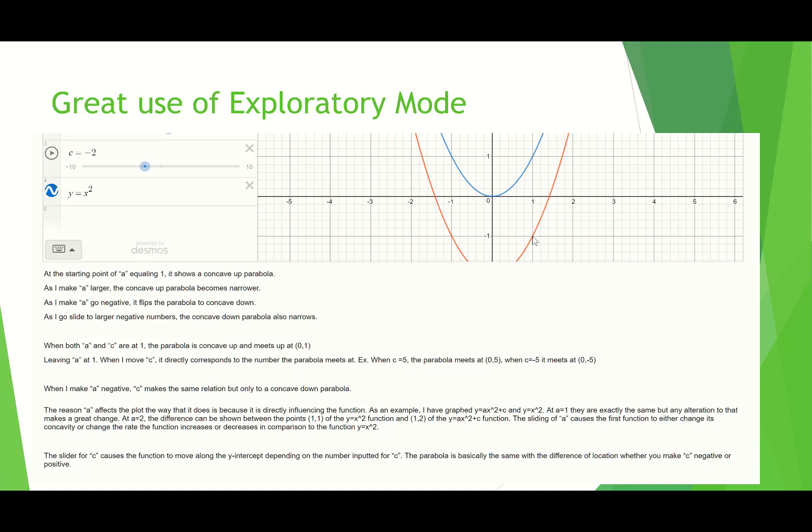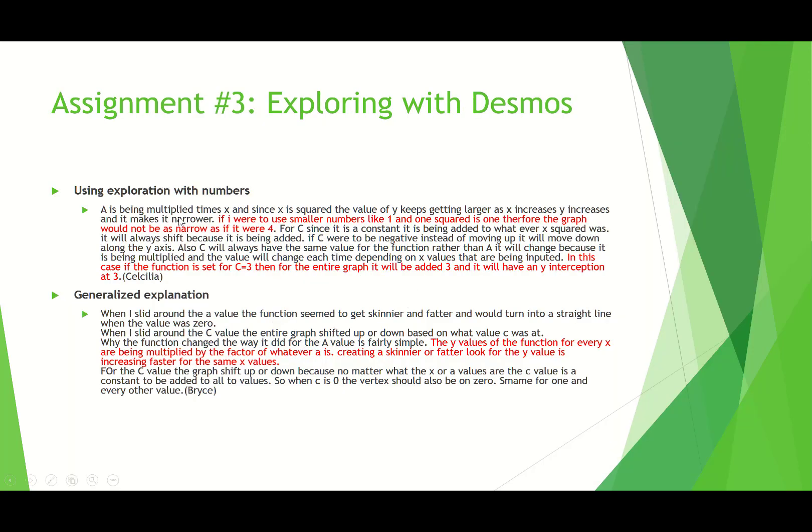And so there's a couple different explanations. Some of you just did an amazing job of answering that question of why. So for example, Cecilia wrote, a is being multiplied times x, and since x is squared, the value of y keeps getting larger as x increases and y increases and it makes it narrower. If I were to use smaller units like 1, and 1 squared is 1, therefore the graph would not be as narrow as if it were 4. So again, it's this idea of exploration with numbers. In this case, if the function is c equals 3, the entire graph will be added 3, and the y-intercept will be at 3.